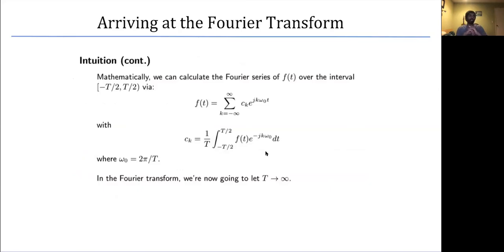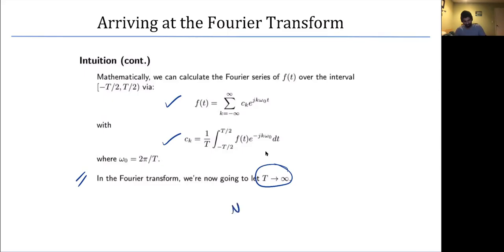We know we can calculate the Fourier series of a periodic signal over an interval of length T. For the Fourier transform, we rewrite these equations allowing T to go to infinity. The math of the Fourier series with T → ∞ yields the Fourier transform, which will be covered in next week's lecture.